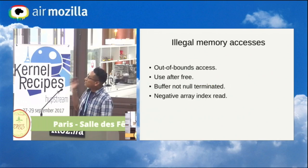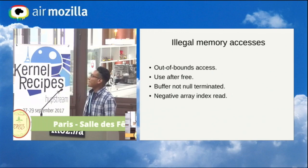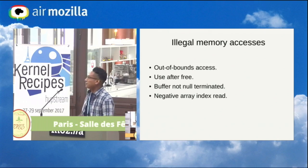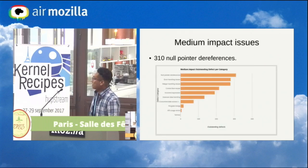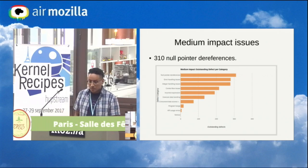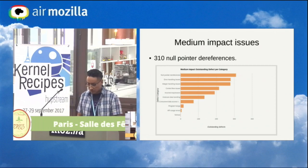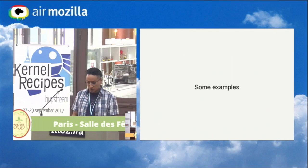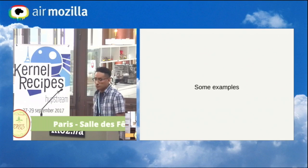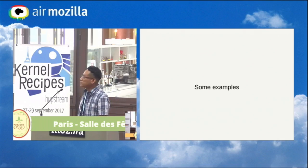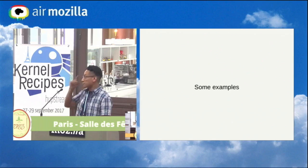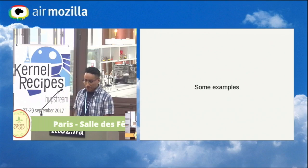You can see the types of issues that fall into these categories. For medium impact issues, the tool reported more than 300 null pointer references in the Linux kernel. Now I'm going to walk you through some examples of the issues I've managed to resolve so far. I selected a variety of issues.